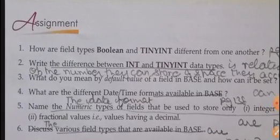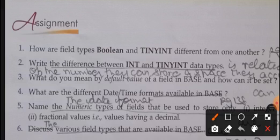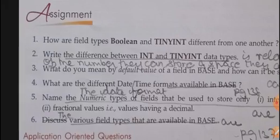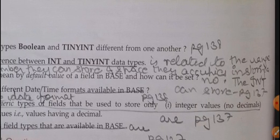Now let's start with the second question of the assignment. That is write the difference between INT and TINYINT data type. Same difference regarding range and space. First you have to write from the question: The difference between INT and TINYINT data type is related to the range of the number they can store and space they occupy in storing a number. The INT can store - after writing this, switch over to page number 137.